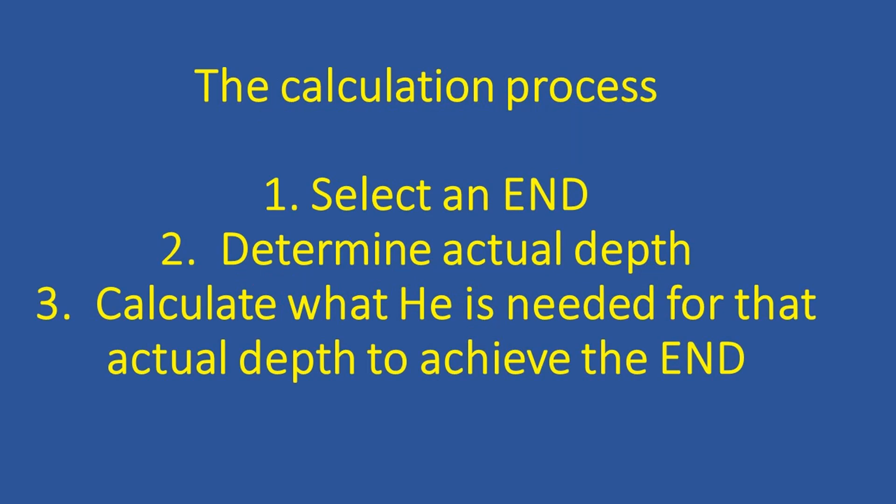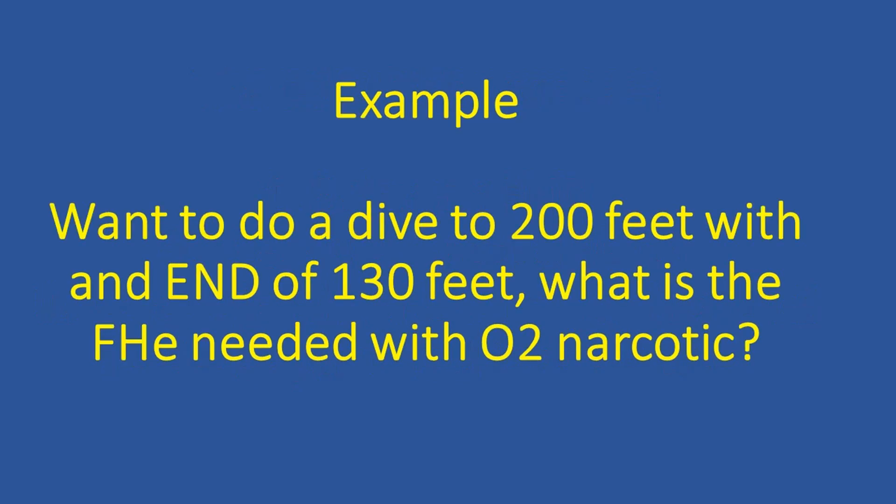Once we have all that, we're going to calculate what percentage of helium is needed for that actual depth to achieve the desired equivalent narcotic depth. It's high time for an example. So we want to dive to a depth of 200 feet and we want to use an END of 130 feet. So we're going to calculate the fraction of helium needed, provided that we are going to have O2 narcotic. I'm actually going to illustrate this two different ways. The first way is with a method that should make intuitive sense, and then we're going to go with the straight equation calculations that you would use once you understood the calculation process.